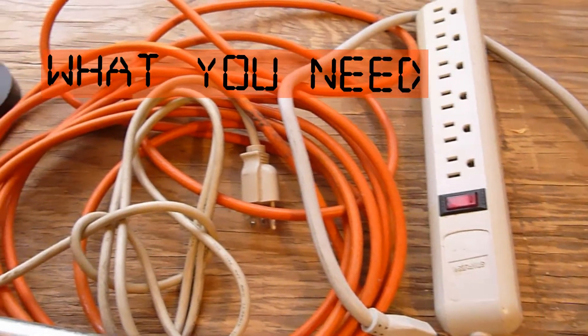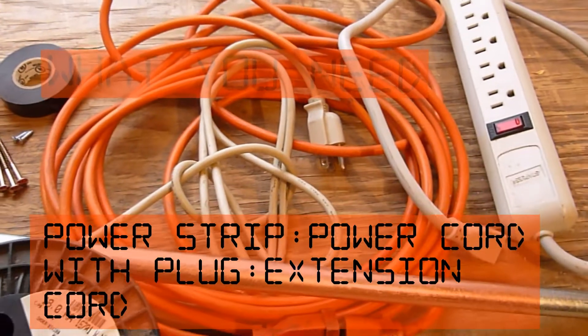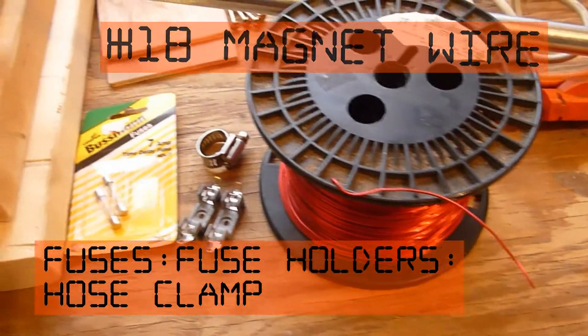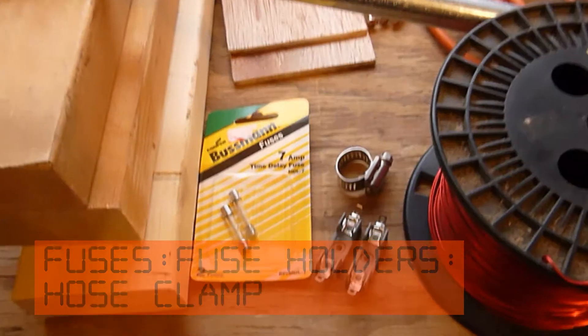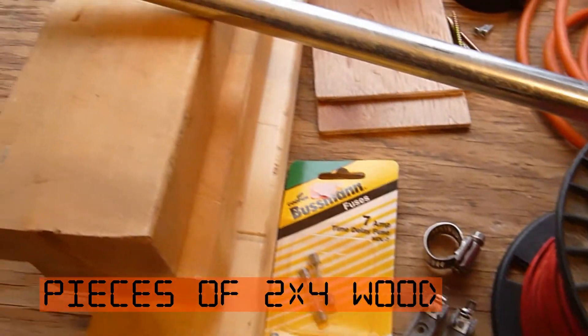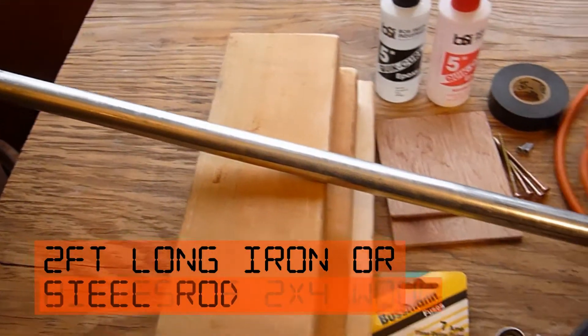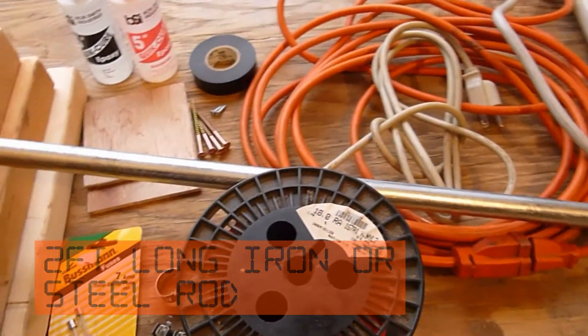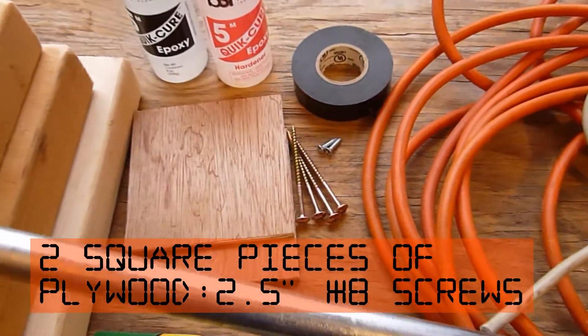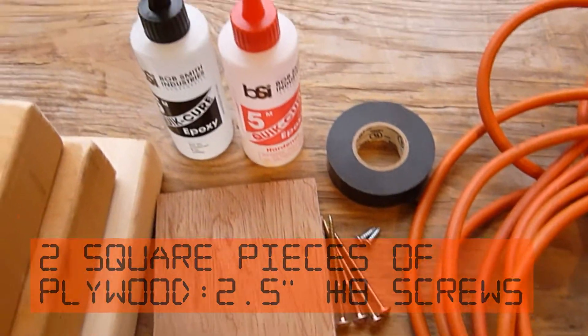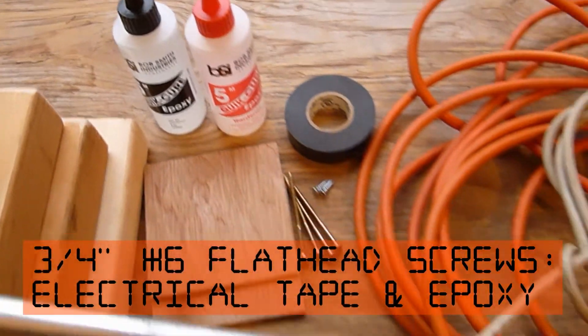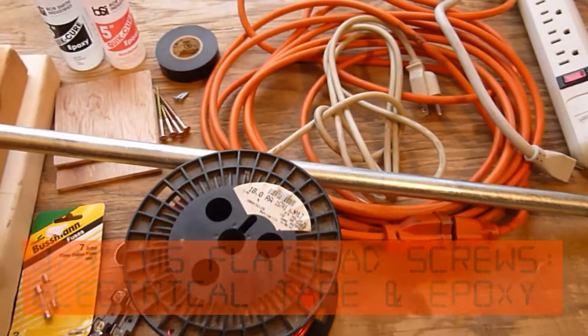Here's what you'll need for this project: power strip, power cord with ground, heavy duty extension cord, number 18 magnet wire, 7 amp slow blow fuses, fuse holders and a small hose clamp, pieces of 2x4 wood, 2 foot long iron or steel rod, 2 square pieces of plywood, 2 1/2 inch number 8 wood screws, 3 1/4 inch number 6 flathead wood screws, electrical tape and epoxy.